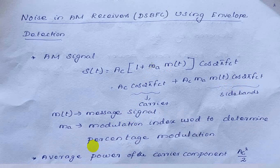To find the channel signal to noise ratio, we need to find the average power of the signal and the average power of the noise. To find the power, we use the formula V²/R. Taking R = 1, power is V²/2. The average power of the carrier component is AC²/2. The average power of the sidebands is AC² × MA² × P / 2, where P is the average power of the message signal M(t).